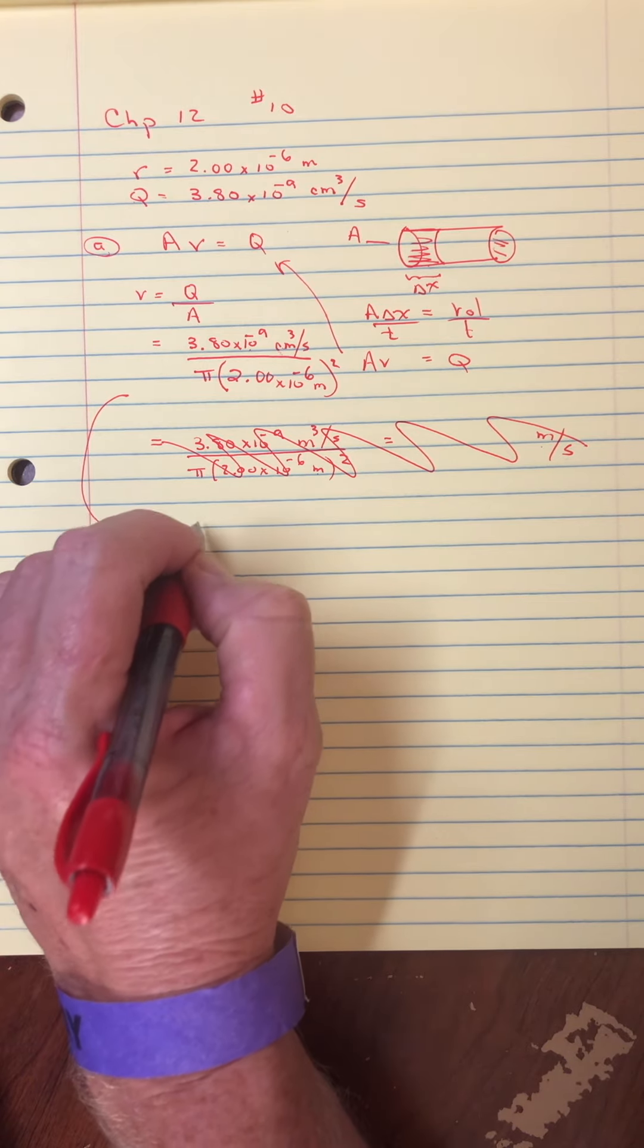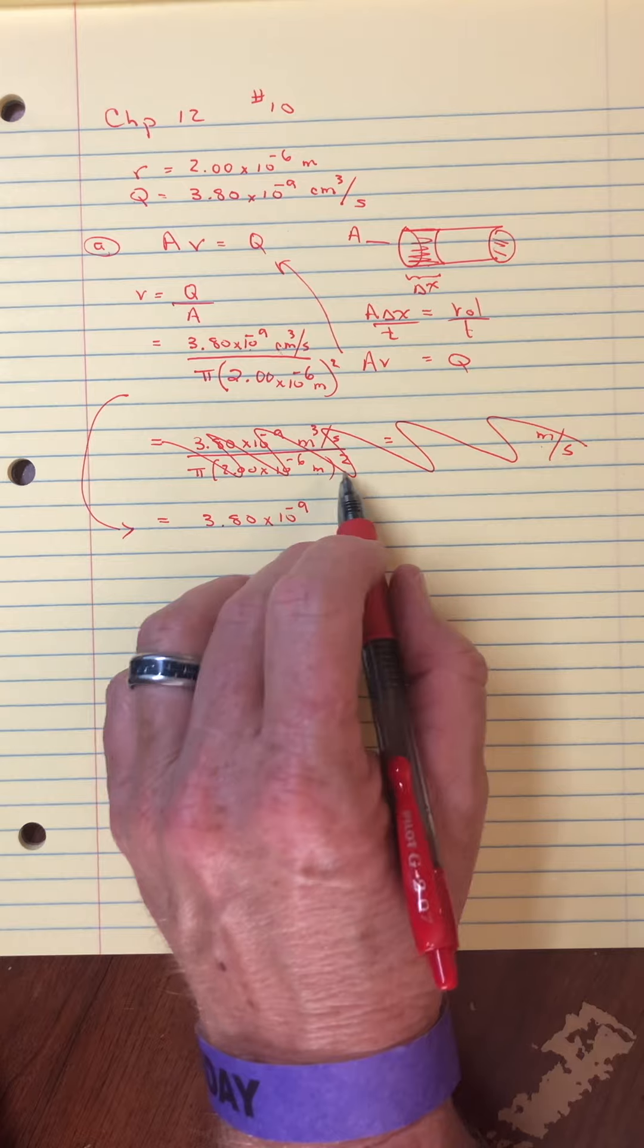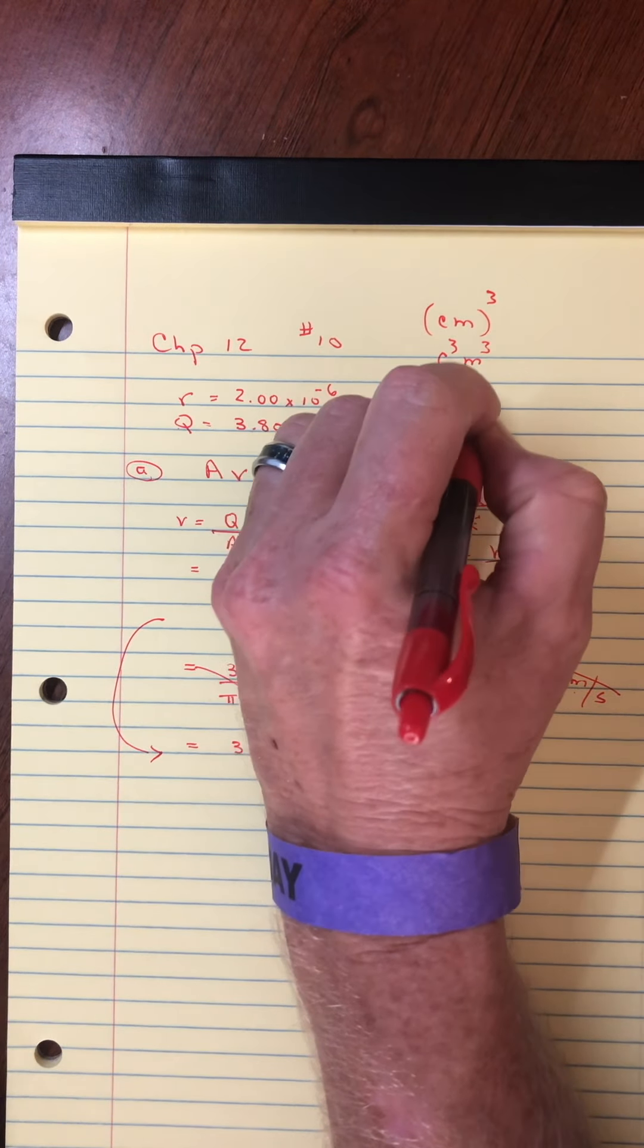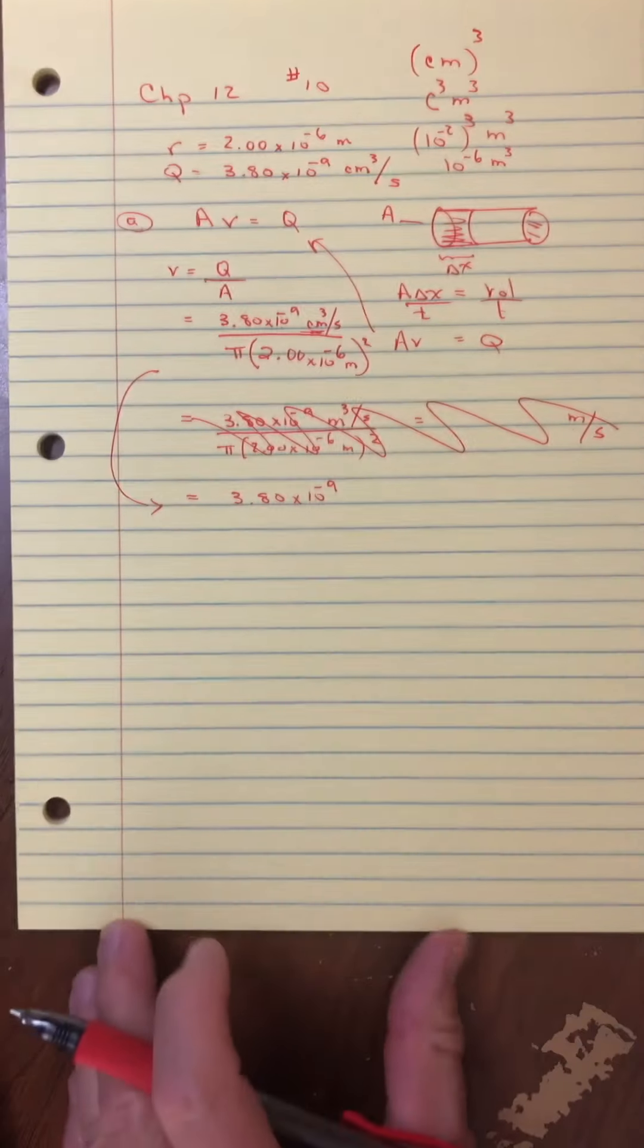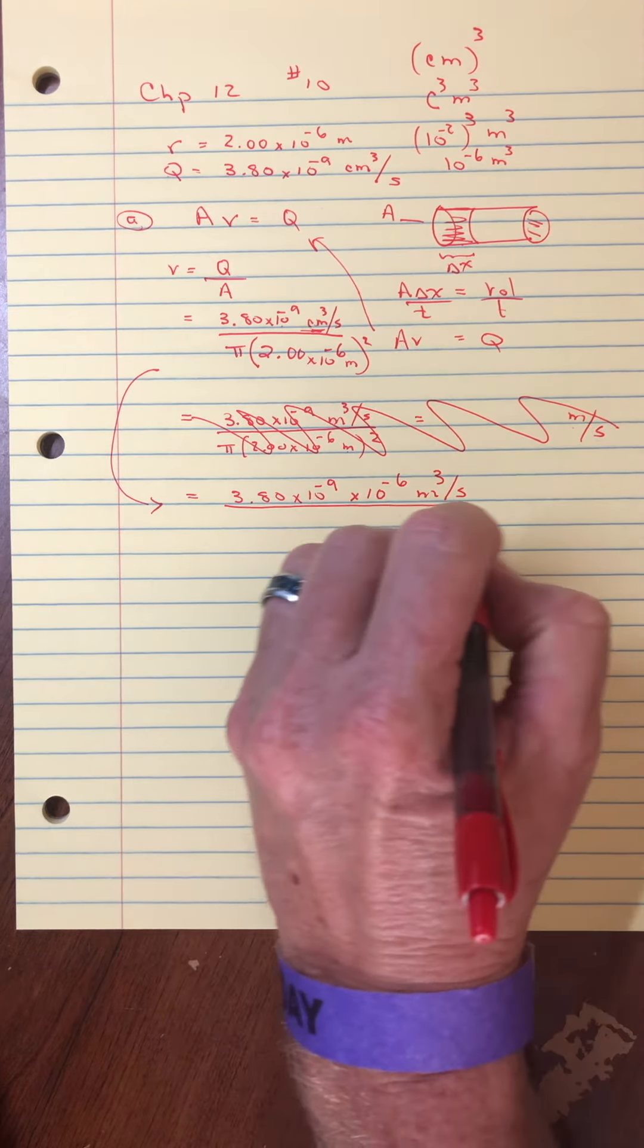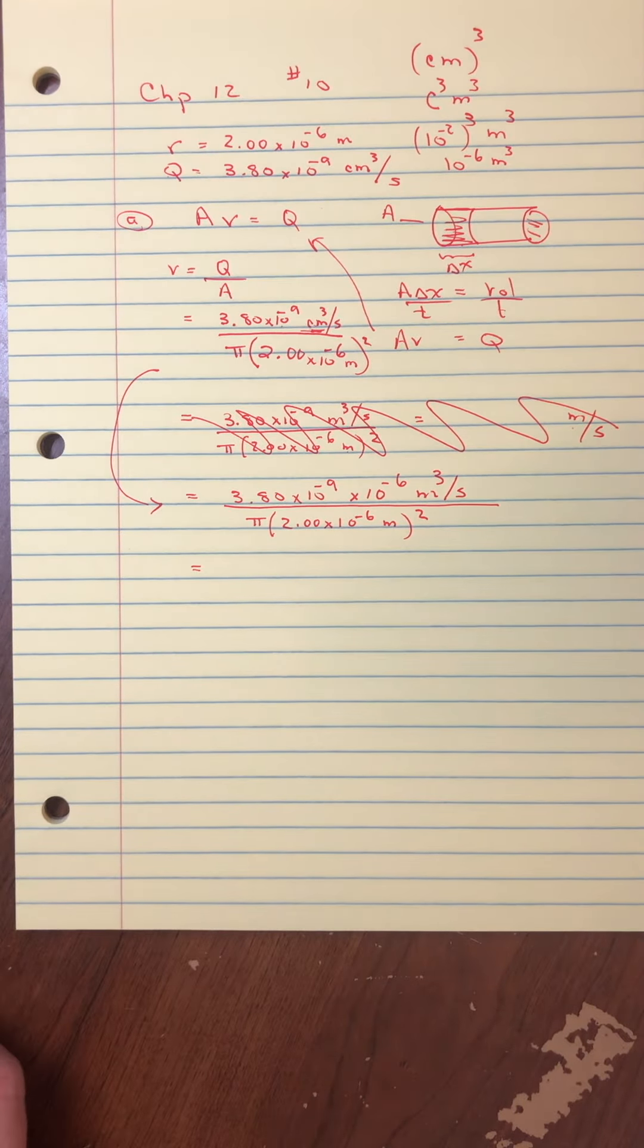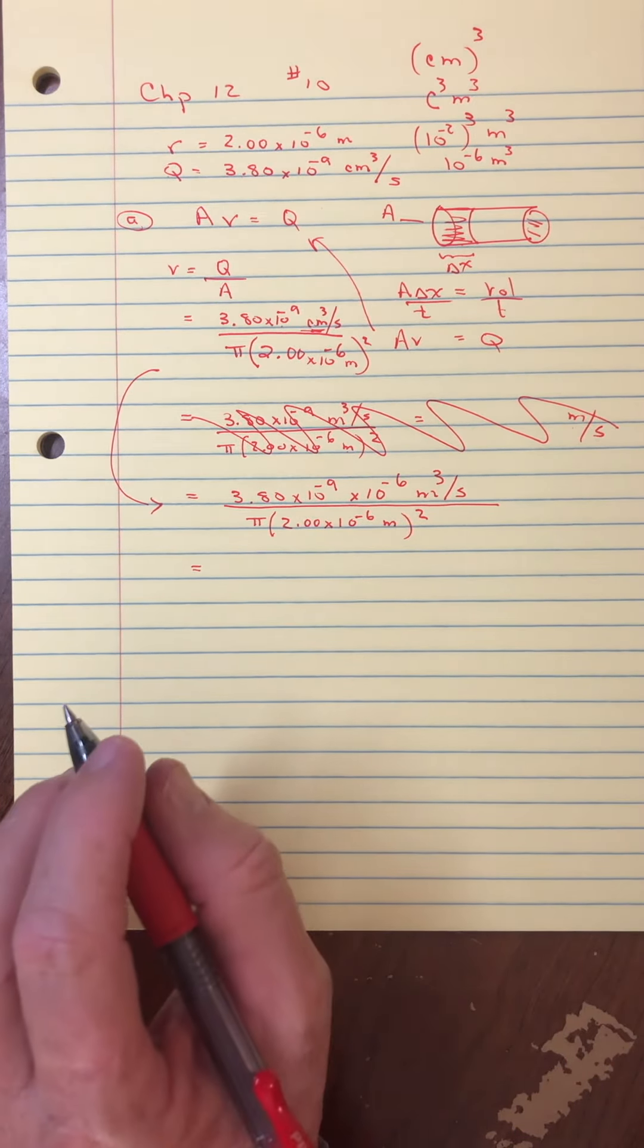So let's go 3.80 times 10 to the minus 9. And then let me do a unit conversion. Let me take it actually as centimeter. Remember centimeter cubed means we have centimeter cubed and meter cubed. And centa is 10 to the minus 2, raised to a power of 3 is 10 to the minus 6. So I'm going to take this as times 10 to the minus 6 meters cubed per second. And now divide it by pi times 2.00 times 10 to the minus 6 meters squared. So forgive me for thinking there was a unit conversion. It just seemed so small. But then that speed was just way too fast. That was the speed of sound.